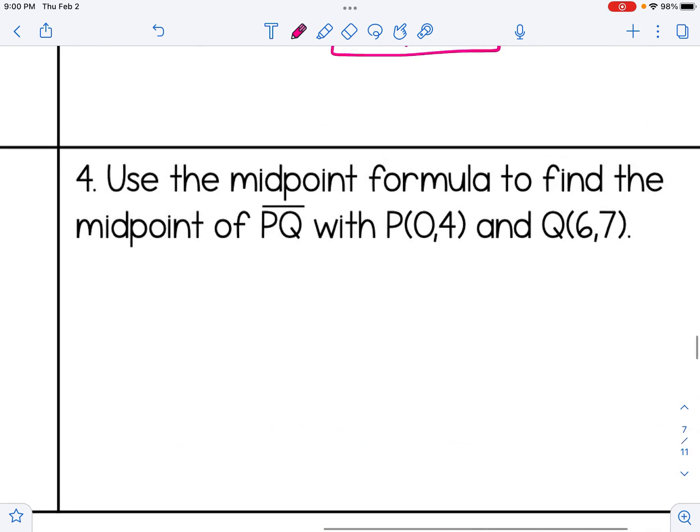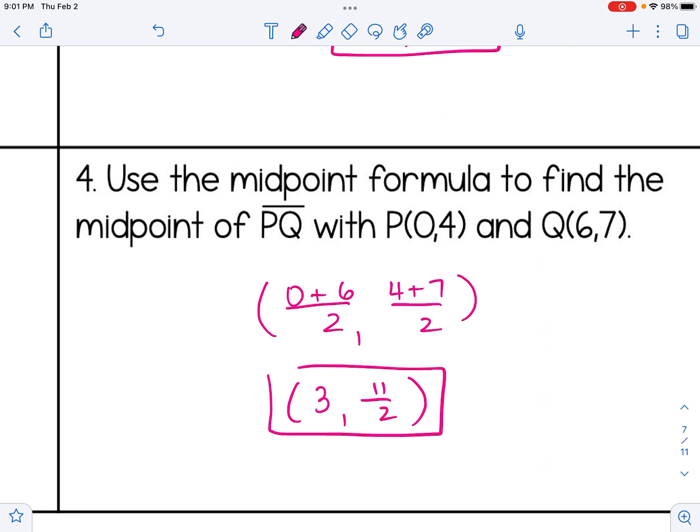And number four, add our x's, divide by 2, add the y's, divide by 2. That's going to give me 3 and 11 over 2. Again, I'm just going to leave the improper fraction. You could also do 3, 5.5. That would also be an acceptable answer.